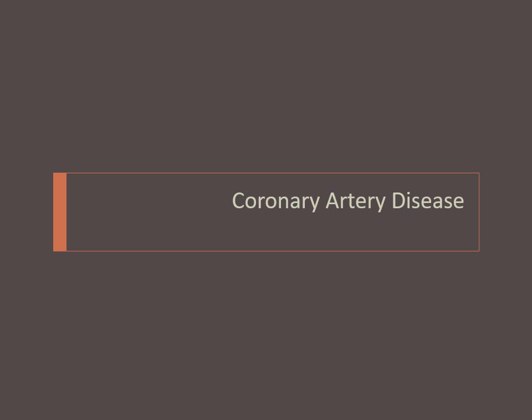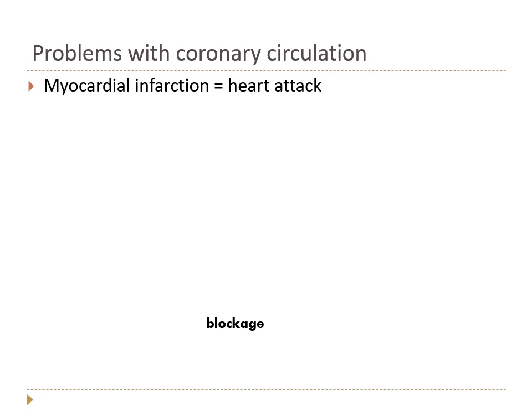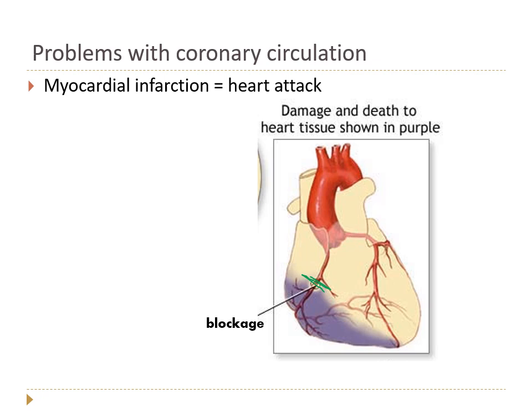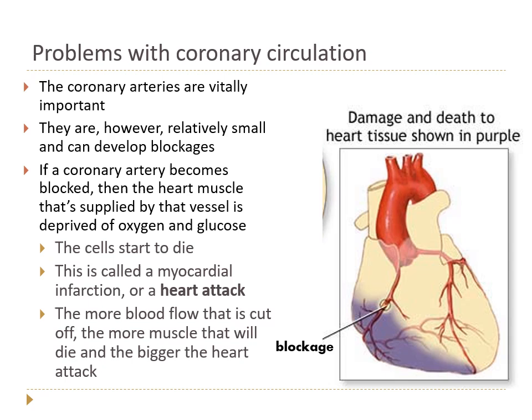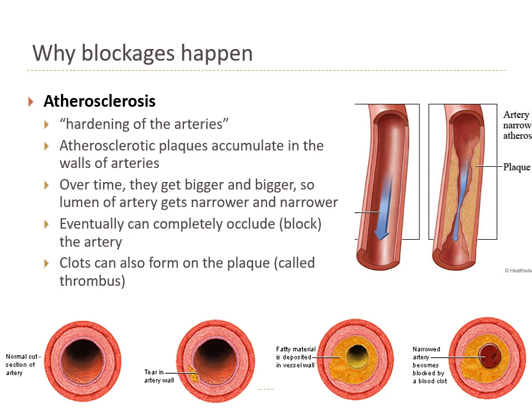If you have problems with your coronary arteries, you'll have problems delivering sufficient oxygen and glucose to your cardiac myocytes. If there's a blockage and blood can't get through, the entire region of the heart dependent on that artery for its blood supply will be damaged and may die. That's called a myocardial infarction, or a heart attack — death of heart muscle tissue due to a blockage of the coronary arteries. So why do blockages happen?